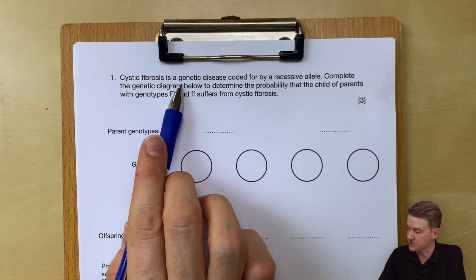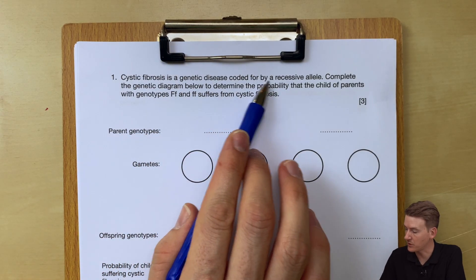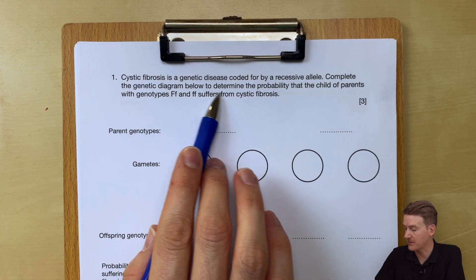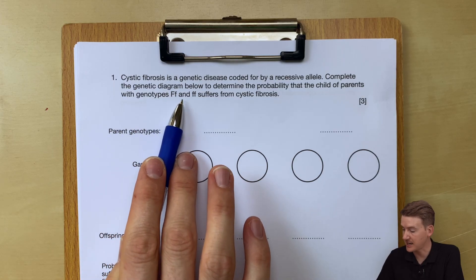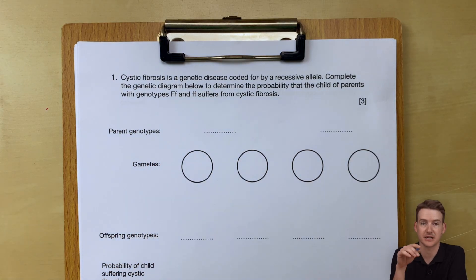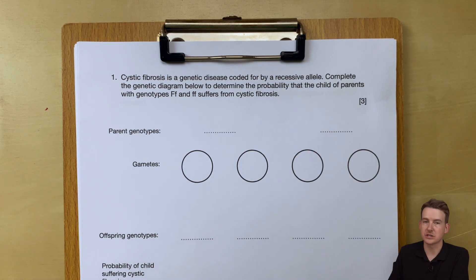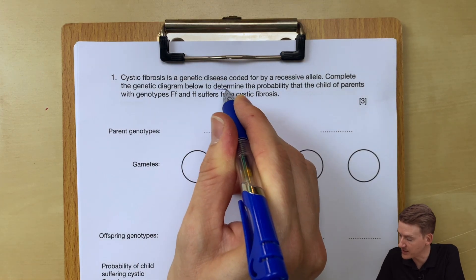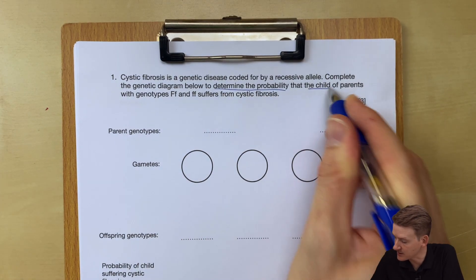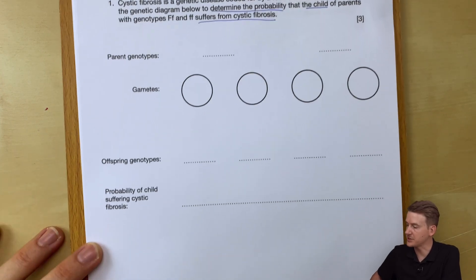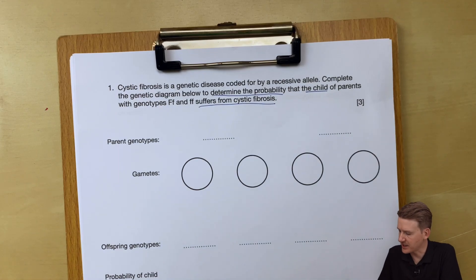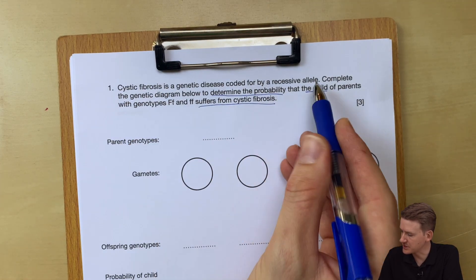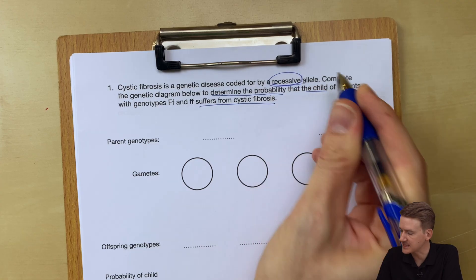So the first question: cystic fibrosis is a genetic disease coded for by a recessive allele. Complete the genetic diagram below to determine the probability that the child of parents with genotypes big F small f and small f small f suffers from cystic fibrosis. There's a lot there to break down, so let's get started with what the question is looking for — determine the probability the child suffers from cystic fibrosis. So cystic fibrosis is coded for by a recessive allele.